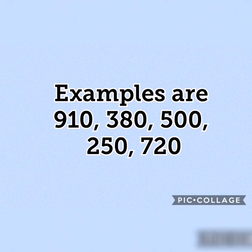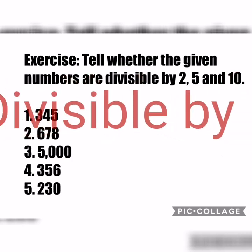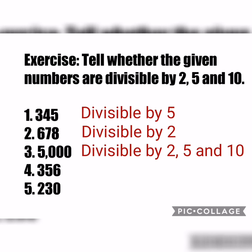I hope it is clear to you, kids. Now, let's have your exercise. Tell whether the given numbers are divisible by 2, 5, and 10. Number 1: 345. If your answer is divisible by 5, then you are correct. Number 2: 678. If your answer is divisible by 2, then you are correct. Number 3: 5000. If your answer is divisible by 2, 5, and 10, then you are also correct.